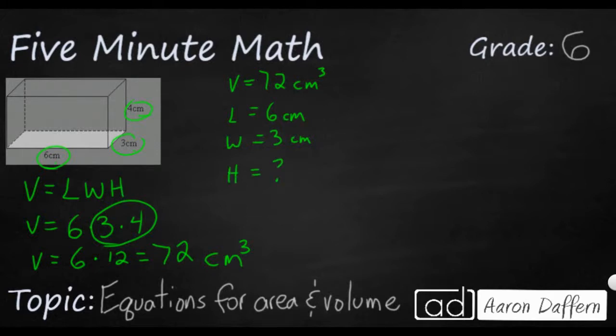Now we've already solved this, so we know that our height is going to be 4. But how can you write that as an equation? Well, let's go back to our equation volume equals length times width times height.